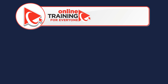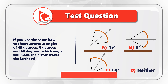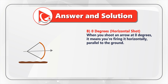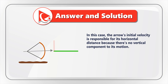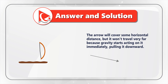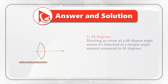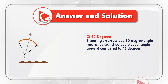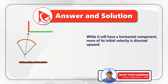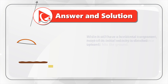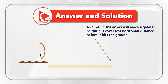I am moving forward to share my version of the analysis and answer. Let's start by looking at the scenario where we shoot the arrow at 0 degrees, which means a horizontal shot. The arrow's initial velocity is responsible for its horizontal distance, since there is no vertical component. The arrow will cover some horizontal distance but won't travel very far because gravity starts acting on it immediately, pulling it downward. Now, comparing it to shooting at 60 degrees — a steeper angle — while it still has a horizontal component, more of its initial velocity is directed upward. As a result, the arrow reaches a greater height but covers less horizontal distance before it hits the ground.